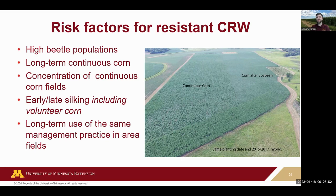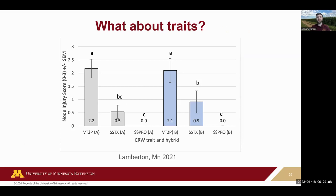Here are a couple of trait options: VIP Terra, SmartStax, and SmartStax PRO, showing root injury ratings — higher ratings indicate higher injury. As you increase the number of stacked traits, sometimes with SmartStax you see more control. With an individual trait alone, you don't see as much control in many cases. Bruce has resistant populations in the Lamberton area — in the 2021 data, SmartStax PRO showed very good control still when you have these pyramided or stacked varieties.